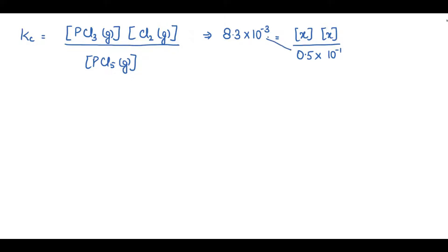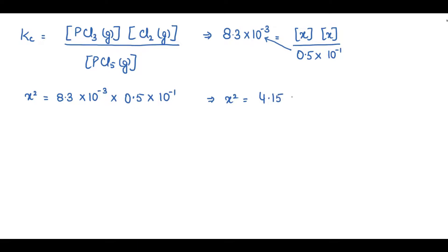Cross-multiplying 0.5 × 10⁻¹ with 8.3 × 10⁻³ and rearranging: x² = 8.3 × 10⁻³ × 0.5 × 10⁻¹. When 8.3 is multiplied by 0.5, the answer is 4.15. Since the powers are being multiplied, we add the exponents: 10⁻³ × 10⁻¹ = 10⁻⁴. So x² = 4.15 × 10⁻⁴.